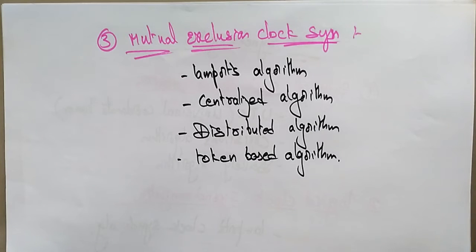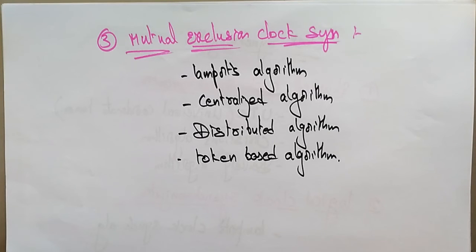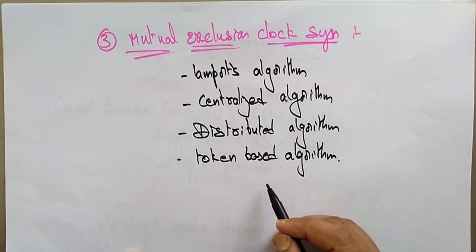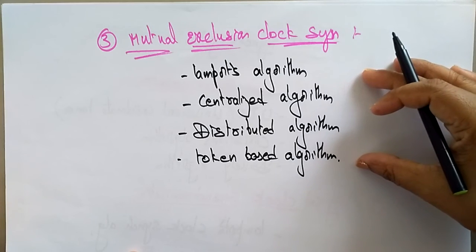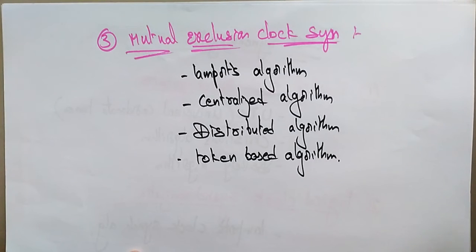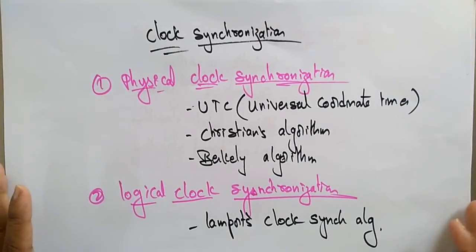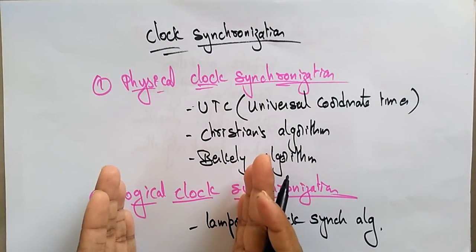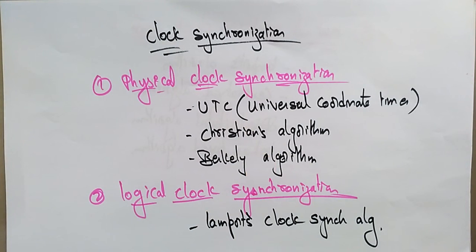So these are all the different techniques we use to make clock synchronization in a distributed environment. For physical clock synchronization the algorithms are UTC, Christian's, and Berkeley algorithm. For logical clock synchronization we use Lamport's clock synchronization algorithm. For mutual exclusion we use Lamport's algorithm, centralized algorithm, and token-based algorithm. In the next coming videos we will discuss each and every algorithm with an example. Thank you.